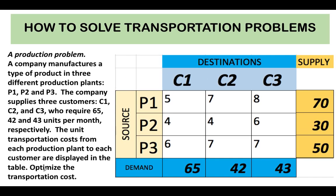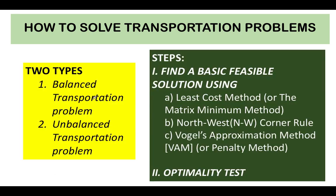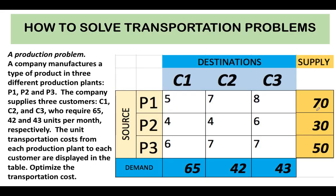Our goal in this problem is to optimize the transportation cost. There are two types of transportation problems. One is called a balanced transportation problem, and the second is called an unbalanced transportation problem. For the balanced type, if you add all the supplies and all the demands, they should be equal. When the supply and demand totals are not equal, we have an unbalanced transportation problem.